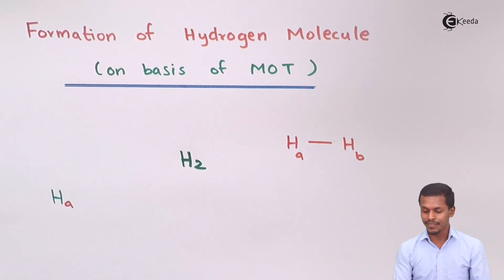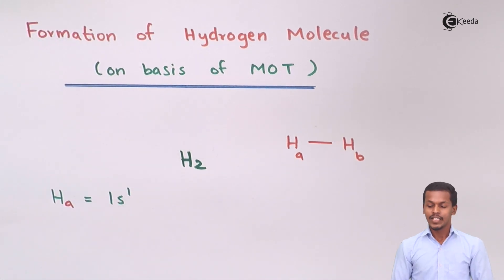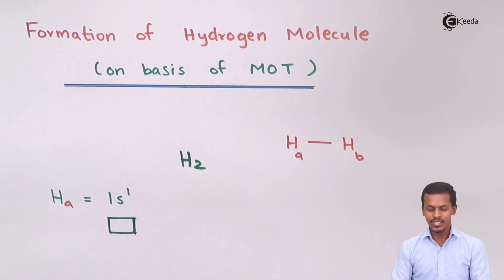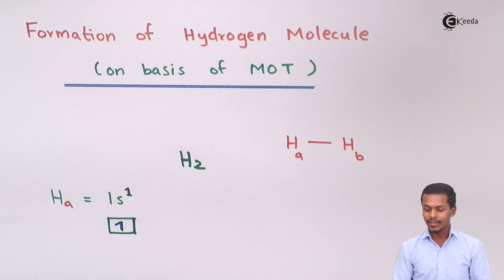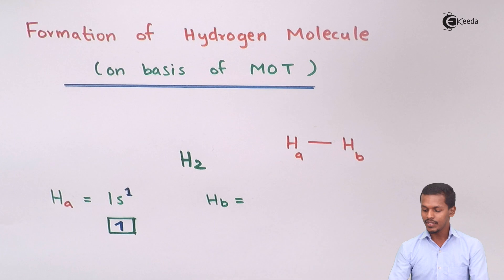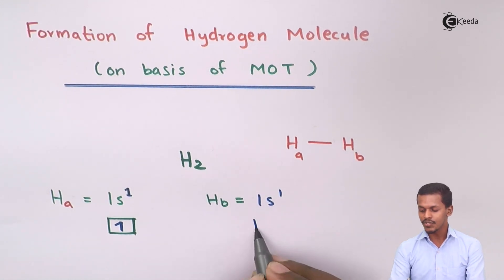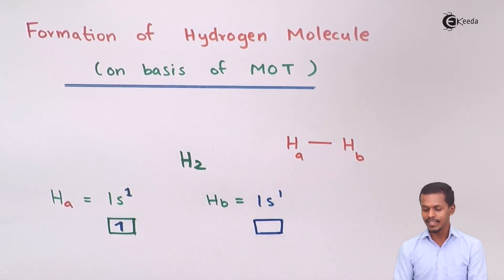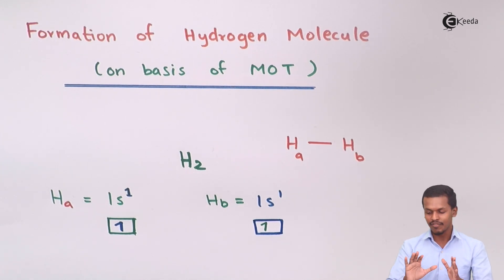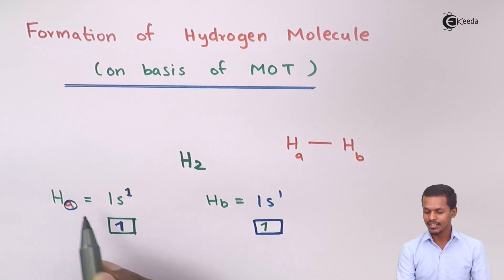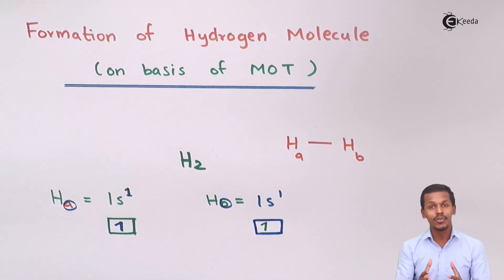The electronic configuration of HA can be written as 1s¹. The atomic orbital of HA consists of one orbital with only one electron present. Similarly, the electronic configuration of HB is also 1s¹ — it consists of one atomic orbital, that is the s orbital, with one electron. We have segregated these two atoms and individually mentioned the atomic orbital for HA and HB, just to indicate that these two hydrogens will now combine with each other.